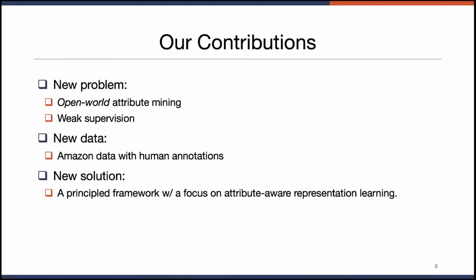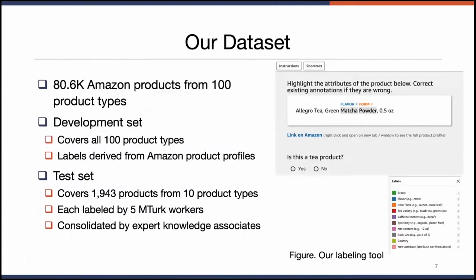Working on this new problem, we collected our own data and open-sourced it. We designed a framework very different from NER-based frameworks, with focus on attribute-aware representation learning. We collected around 80,000 Amazon products from 100 product types. Those products come with text and some attribute information, which we used to build a dev set. We also built a test set with human annotation: around 2,000 products from 10 product types, annotated by crowd workers and consolidated by expert knowledge associates.